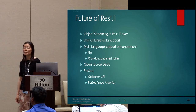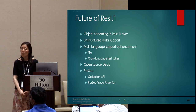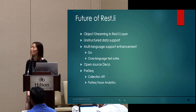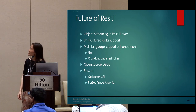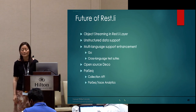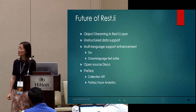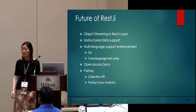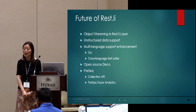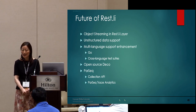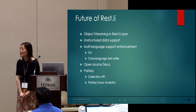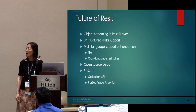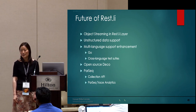Rest.li has proven to create a robust RESTful service architecture that works at scale, with wide adoption at LinkedIn and Coursera. On the roadmap: in the Rest.li layer, we want to support object streaming and unstructured data. For multi-language support, we want to add Go language and propose a cross-language test suite to easily add more language bindings. We are also attempting to open source our Deco library to enhance Rest.li with more powerful graph query capability. For Parsec, we plan to provide a more developer-friendly collection of APIs and empower Parsec traces with intelligent data analytics using machine learning.